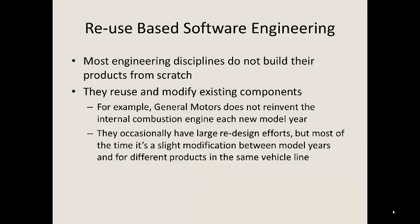Basically, a lot of engineering — in fact almost all of it — doesn't build things from scratch. They reuse and modify existing components. For example, General Motors or Ford don't reinvent the internal combustion engine each new model year. They use a variation on what they already have.